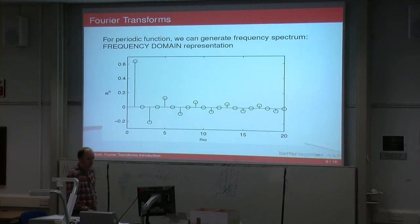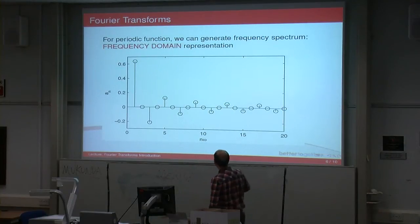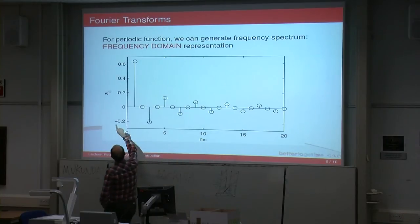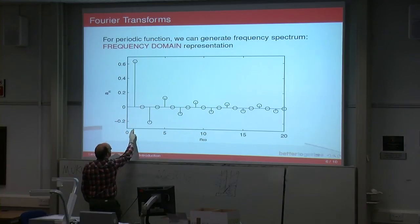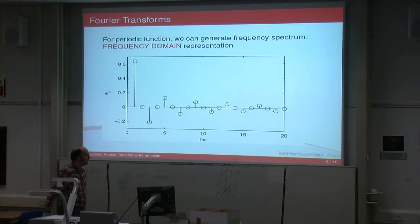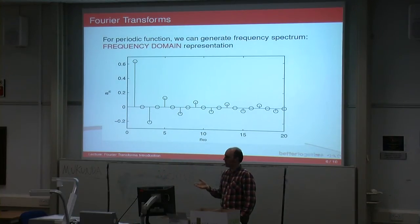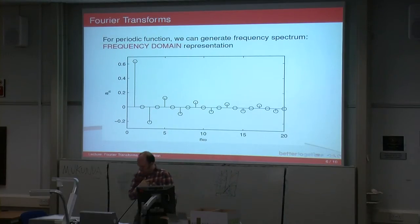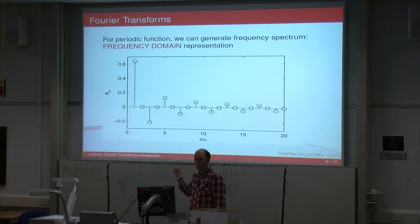We can generate a frequency domain representation. Along the bottom we have n*omega, and up the vertical axis we have a_n. When n equals 1 at omega_1 we have a certain value; n equals 2 gives 0; n equals 3 gives a negative value. The amplitude gets smaller and smaller as n increases — this is shown up to n equals 20. This is the frequency domain representation of that periodic function.